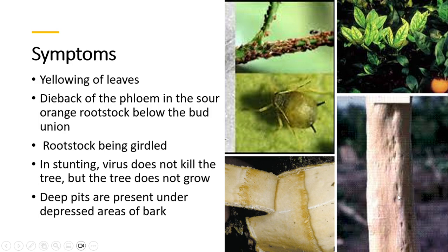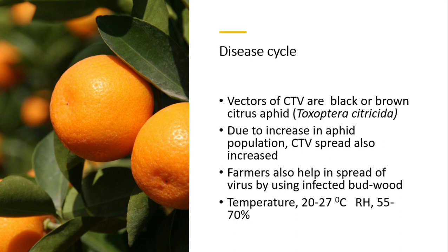Regarding the disease cycle, the vectors of CTV are the black or brown citrus aphid. With an increase in aphid population, CTV spread also increases. Farmers also help in the spread of the virus by using infected bud wood. The favorable temperature is around 27 degrees centigrade.